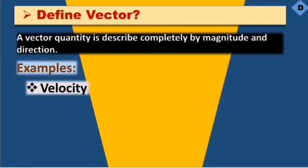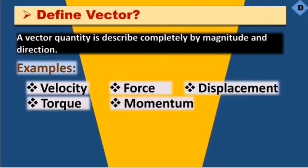The car is moving, so that is a vector quantity. Examples include velocity, force, displacement, torque, and momentum.